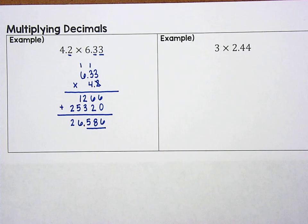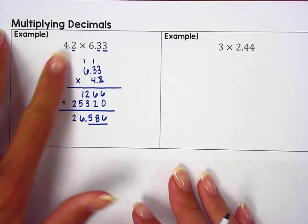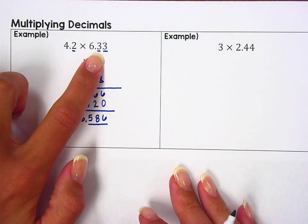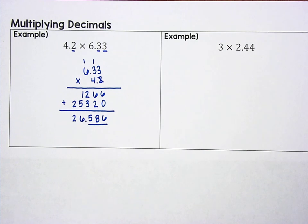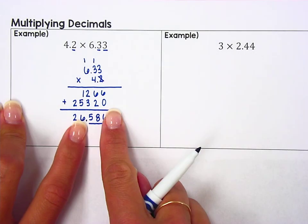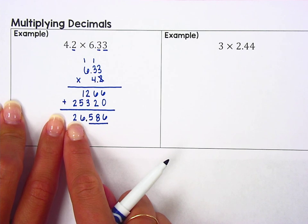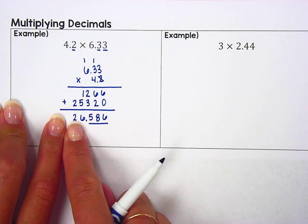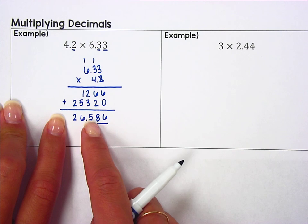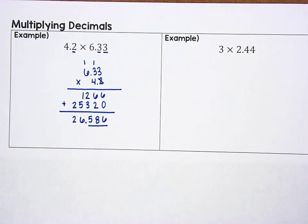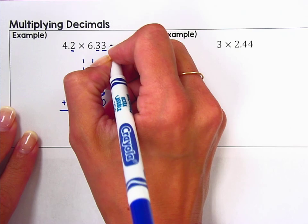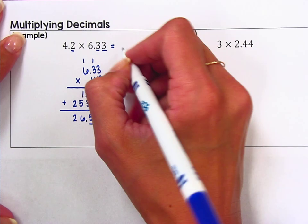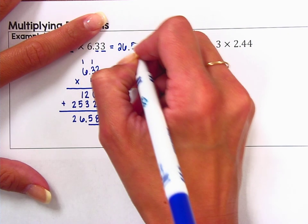We're going to check this and use estimation to see that our decimal point is in fact in the right place. So 4.2 is about 4, 6.33 is about 6. So about 4 times about 6 should be about 24. Our answer is about 24. If our decimal point was here, that would mean our answer would be about 2 or 3. And if our decimal point was here, that would mean that our answer would be about 265, 266. So we know our decimal point is in fact in the right place. So our answer is 26.586.